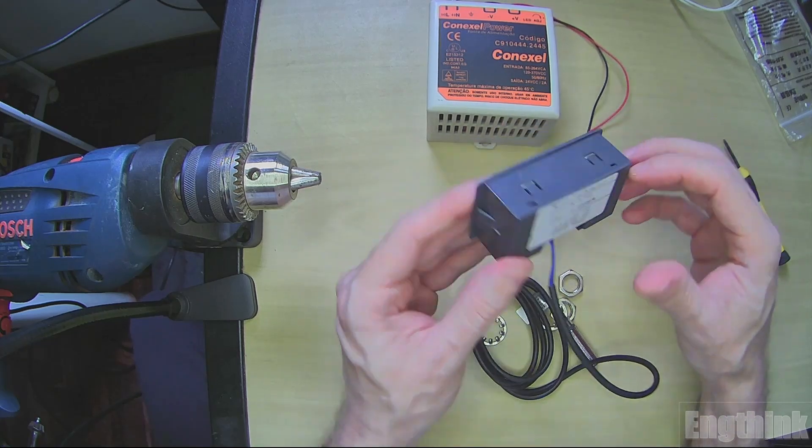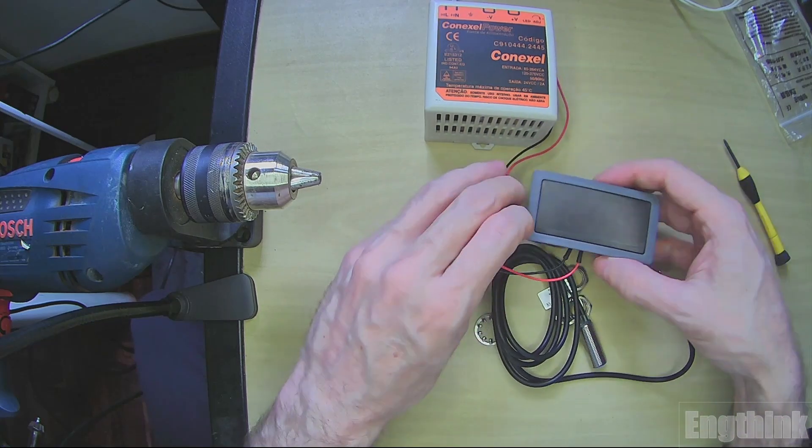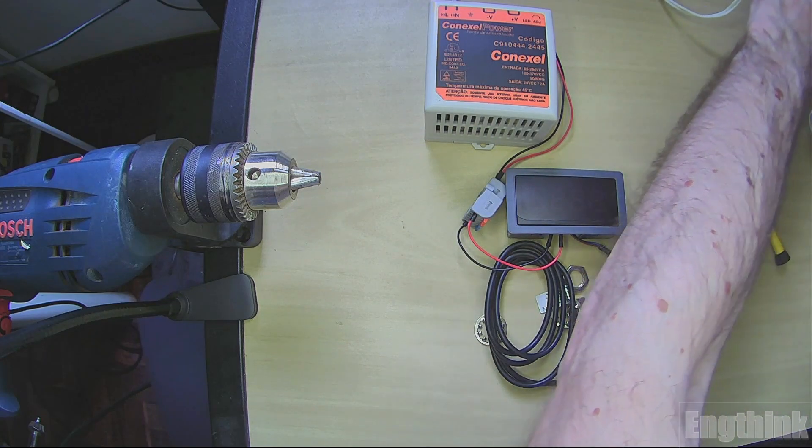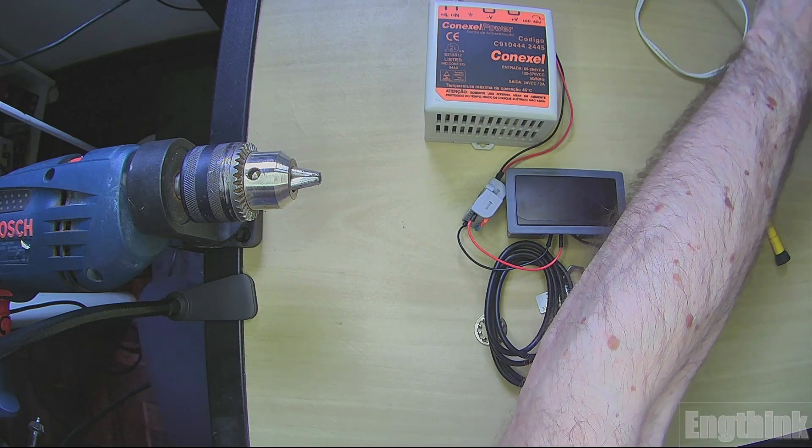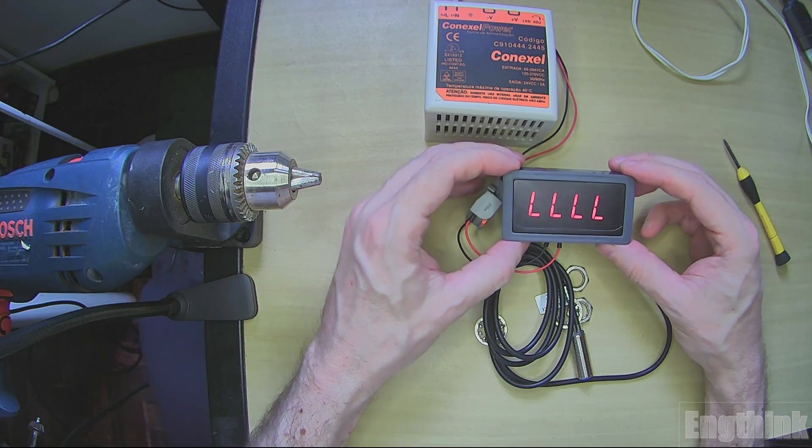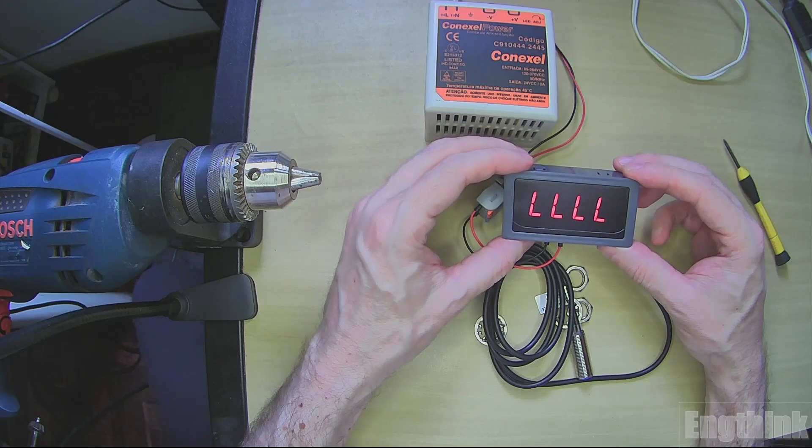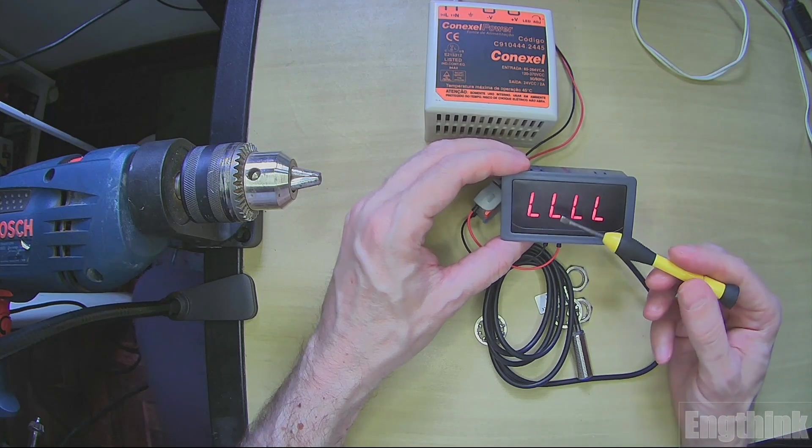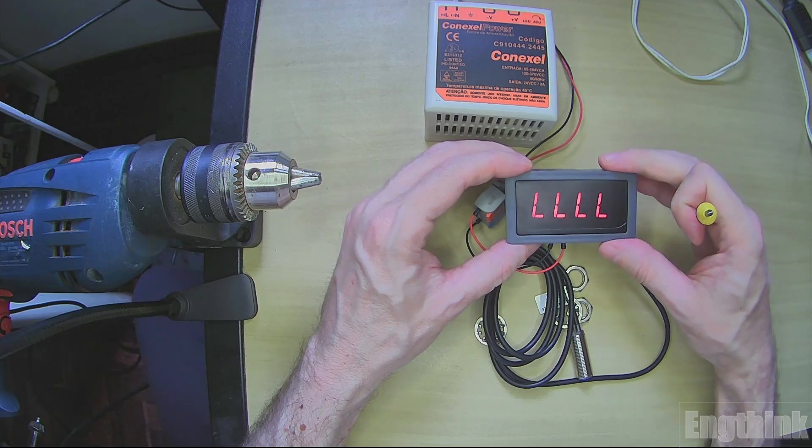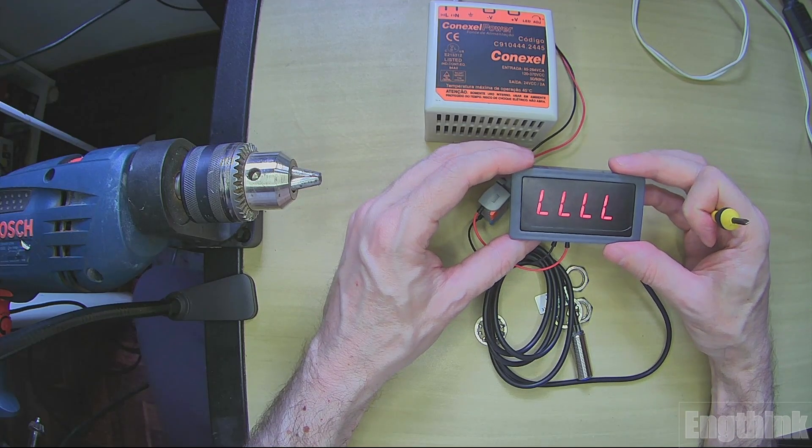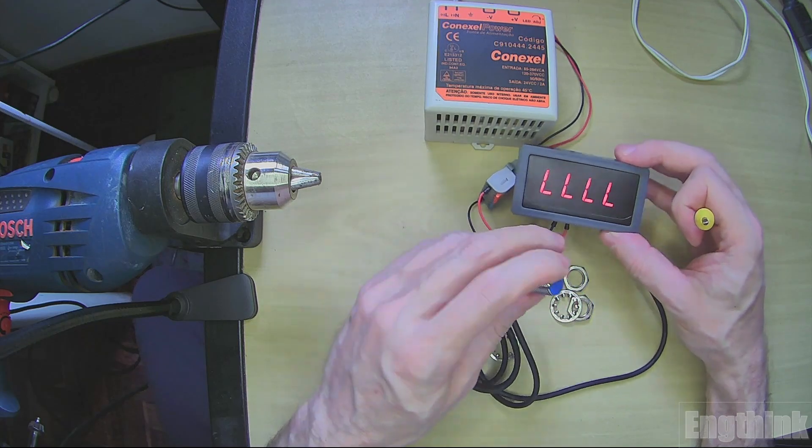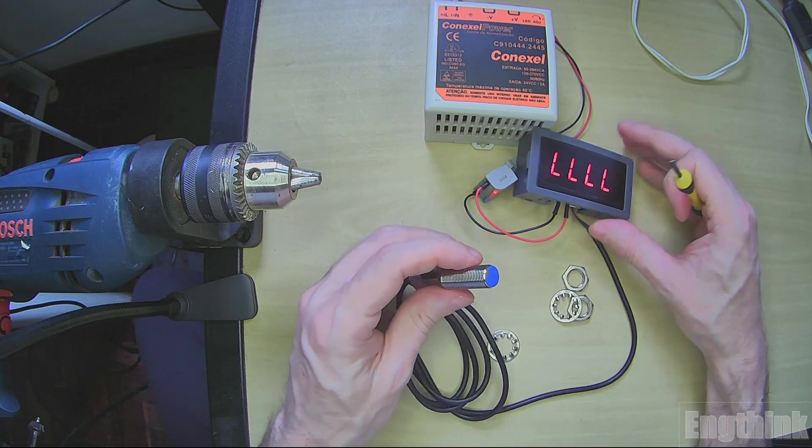So that's it. The sensor is already connected. Let's power up the power supply and see what we have. When we start we can see that we have this indication of L, probably means that it's low. As we don't have any detection in the sensor, we have this L indication.